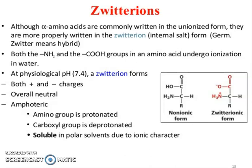Now, the zwitterion. Although alpha amino acids are commonly written in the un-ionized form, they are more properly represented in the zwitterion — or internal salt — form. Zwitterion means 'both' in German. Both the NH and COOH groups in an amino acid undergo ionization in water. At physiological pH 7.4, the zwitterion form predominates with both positive and negative charges, making it overall neutral and amphoteric. The amino group is protonated, the carboxyl group is deprotonated, and it is soluble in polar solvents due to its ionic character.